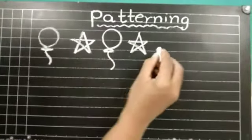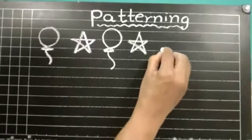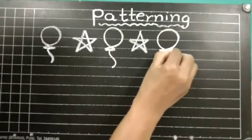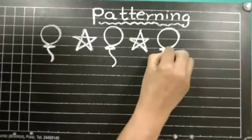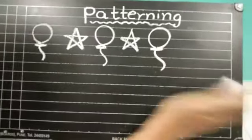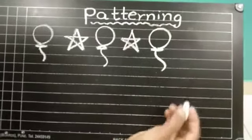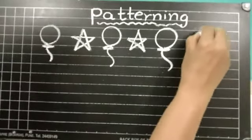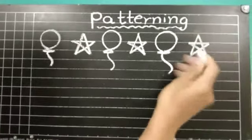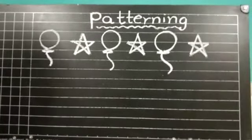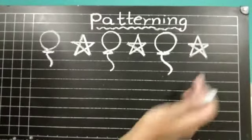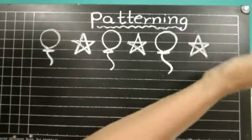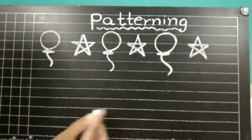What will come next? Very good. Balloon. What will come next? Star. Again, what will come next? Balloon. What will come next? Star. And so on.